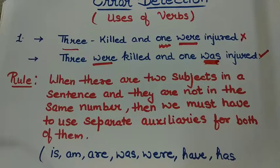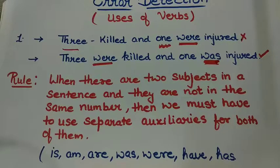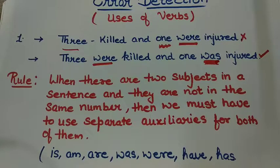I have used 'were' because it is a plural verb, and 'three' is plural, so I use 'were' with three. 'One' means singular, so I have used 'was' with it. So when there are two subjects not in the same number, we must use separate auxiliaries for both. Auxiliary verbs include: is, am, are, was, were, have, and has — and we have to use them according to the subject.